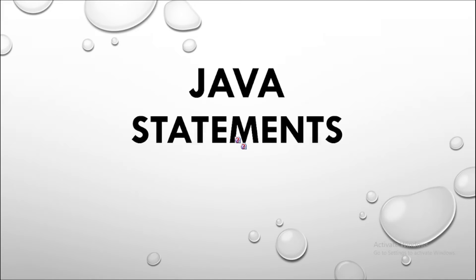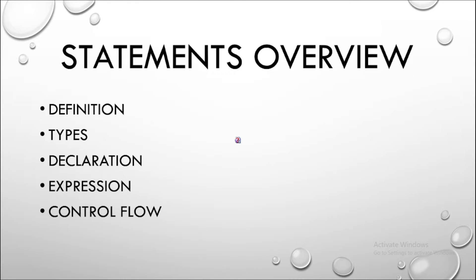Hi guys, welcome to DJava Tutorials. Today's topic is Java statements — a statement overview. By definition, a statement in Java is anything we write in a single line followed by a semicolon. The different types of statements available are: declaration statements, expression statements, and control flow statements.